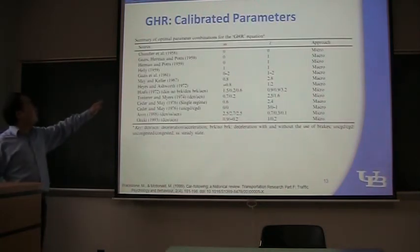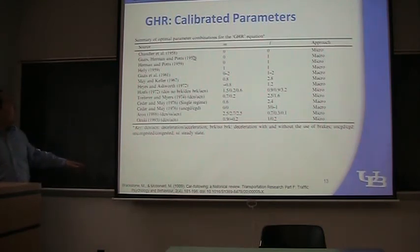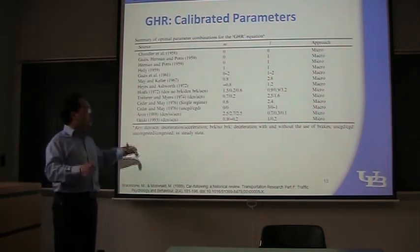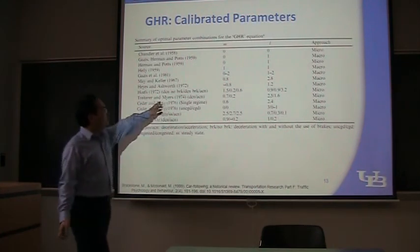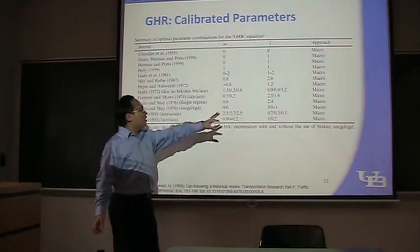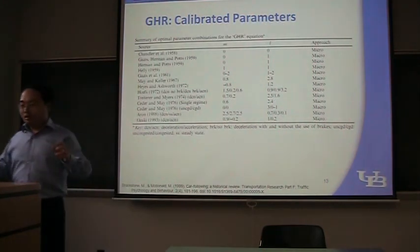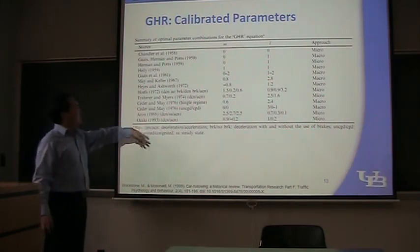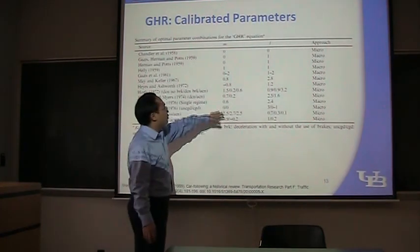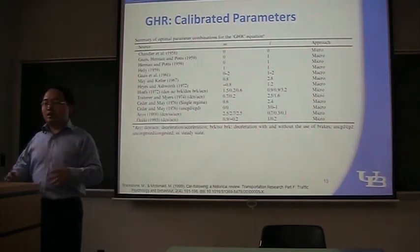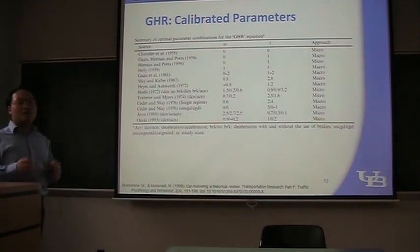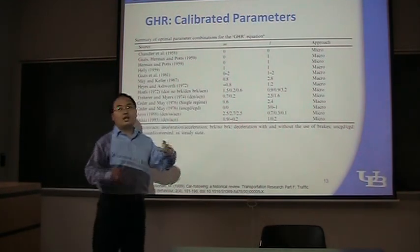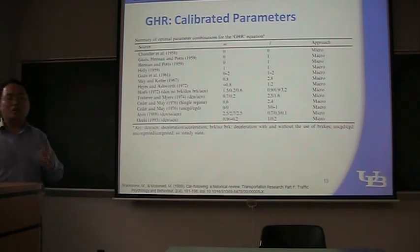Let me talk about the calibrated parameters. There are a lot of people doing the research using GHR model, and they all calibrated their own parameters. And we can see these parameters fall apart. They are not very consistent. See that? So many researchers have done this calibration thing. So they started to criticize this model, saying that it has no good physical meaning. And it's very hard to calibrate. And their calibration result was not very good because they don't get very high R-squares.